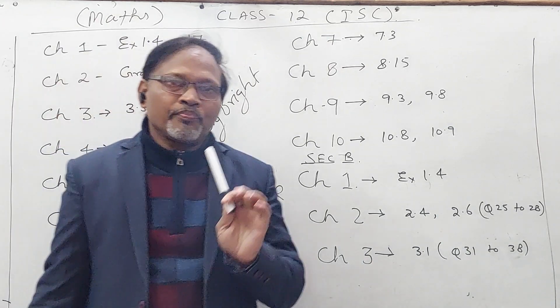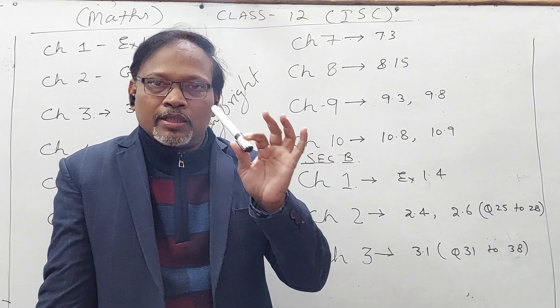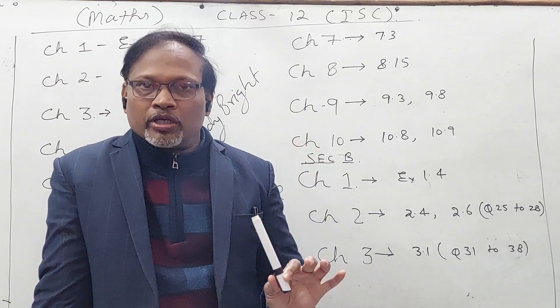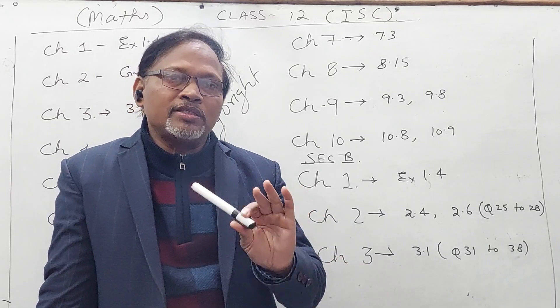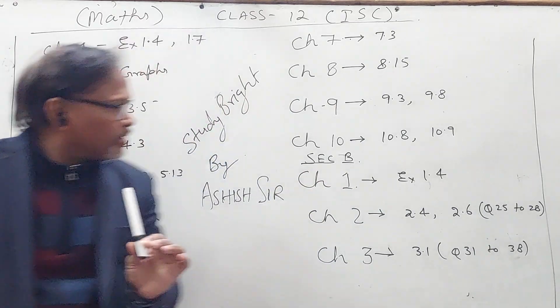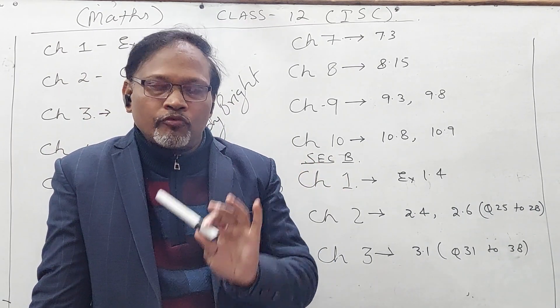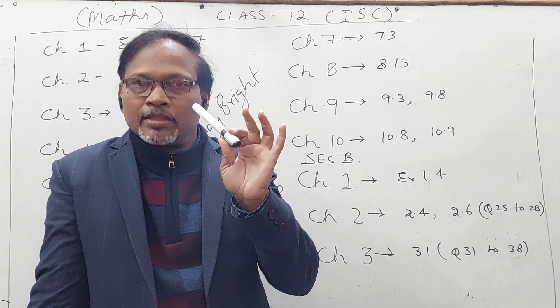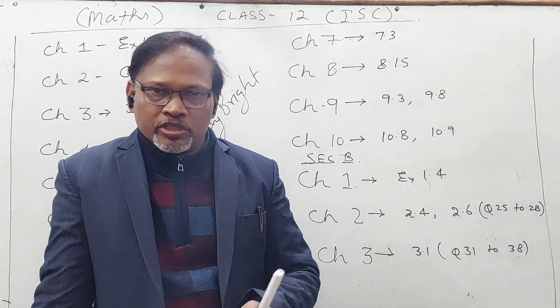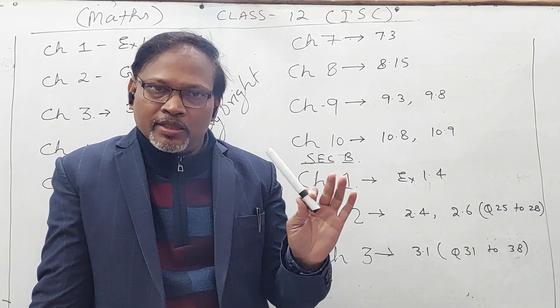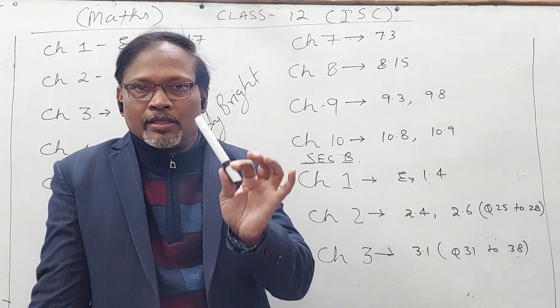In Chapter 2, Inverse Trigonometric Functions, graph-related questions are not in your course. In Chapter 3, Matrices, exercise 3.5 is not in the syllabus. Then Chapter 4, Determinants - everything is there except exercise 4.3. Using determinants you can find the area of the triangle, this is not there. Differentiation of determinants is also not there, so these questions are not in your syllabus.